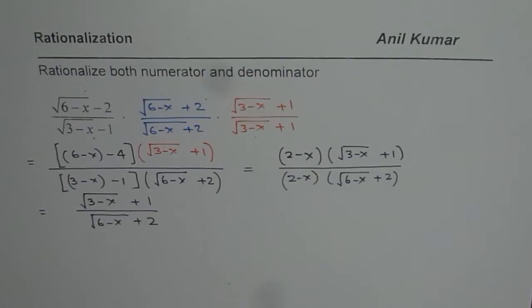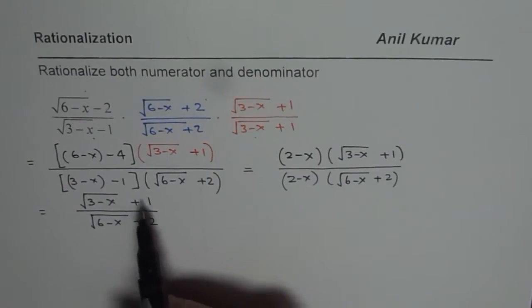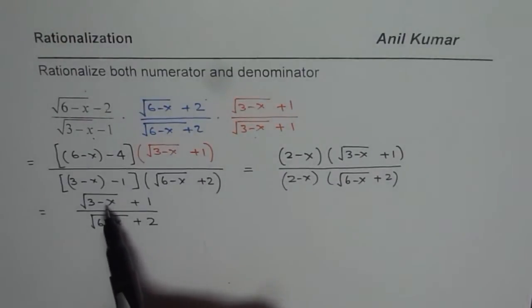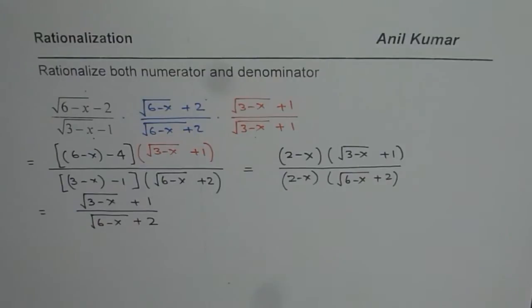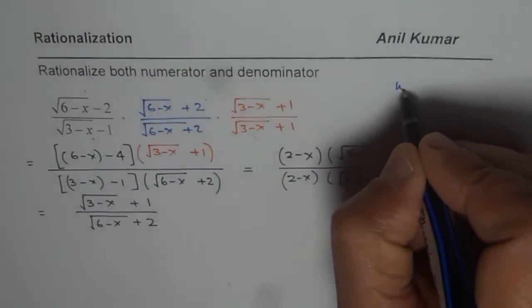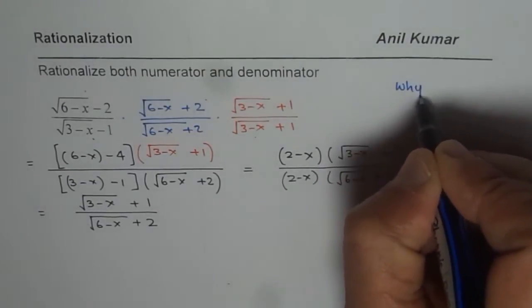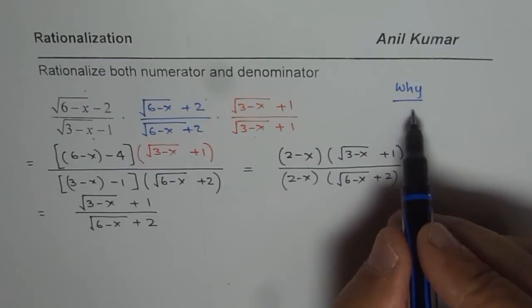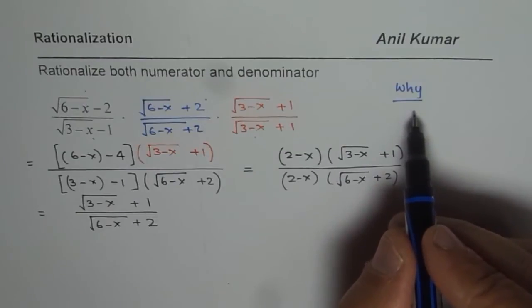In such examples, what you notice is that in spite of rationalizing both numerator and denominator, we still have radicals in both. But then the question is: why did we do it? That is a very important question. Once we do limits, we will understand its significance.